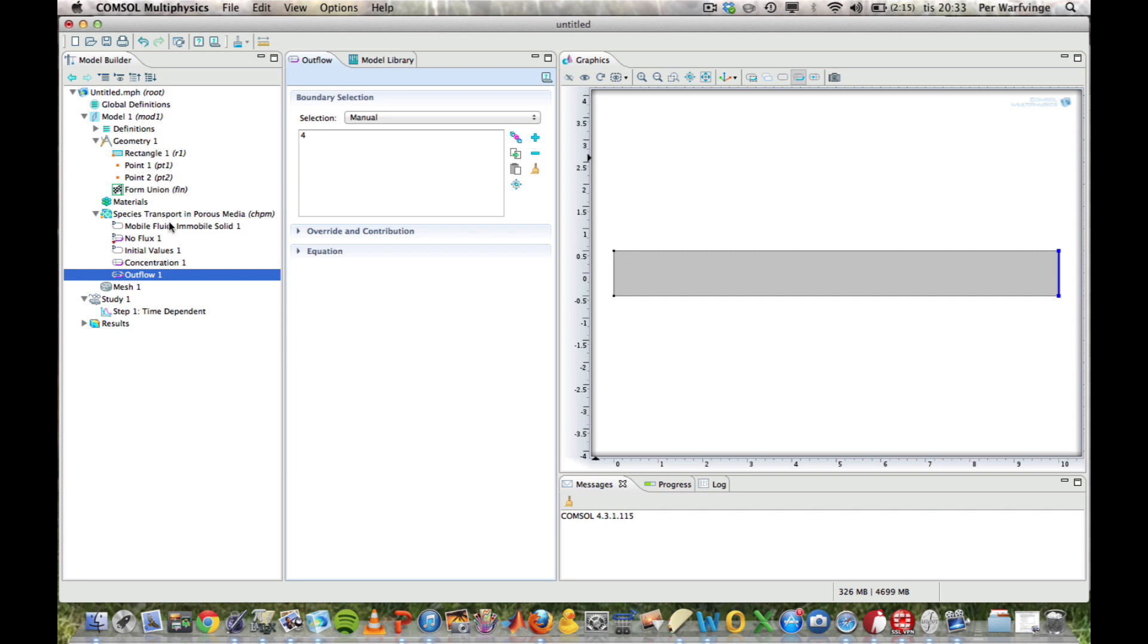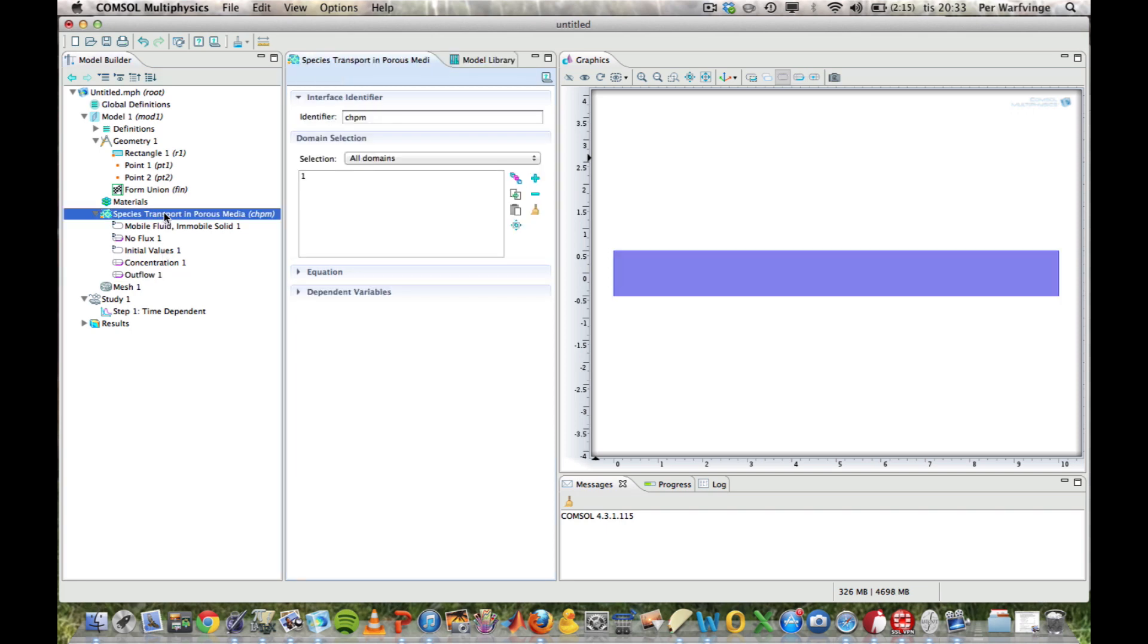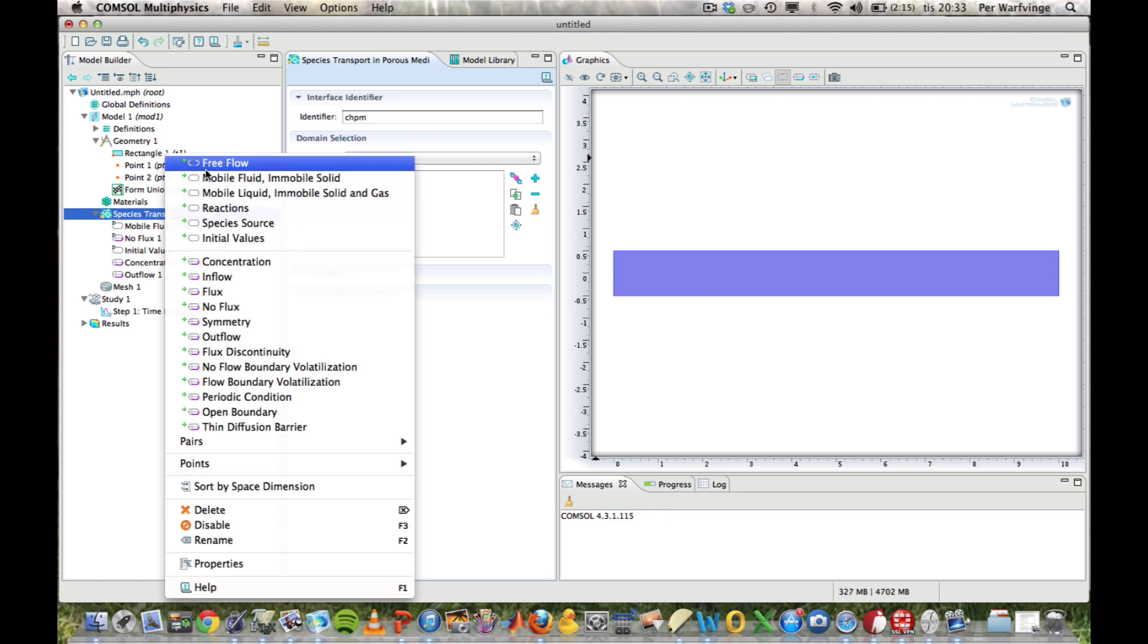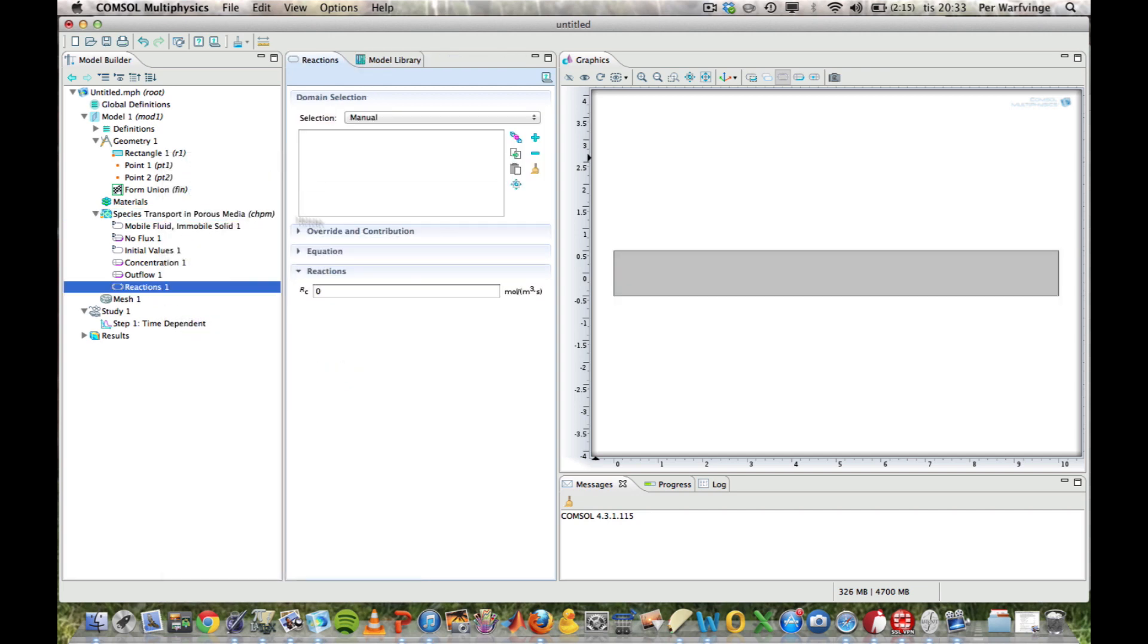The next thing we have to do is to define the reaction. Put the cursor here. Right click. And we see that we have an option to define a reaction. We do that. We say it's right there. That's where the reaction takes place. All over. And the reaction will be described by minus 0.1 times C squared. That's the kinetic equation. And the final thing we should do is to say, what's the initial value? Well, the initial value refers to this entire volume. And the default value is 0.